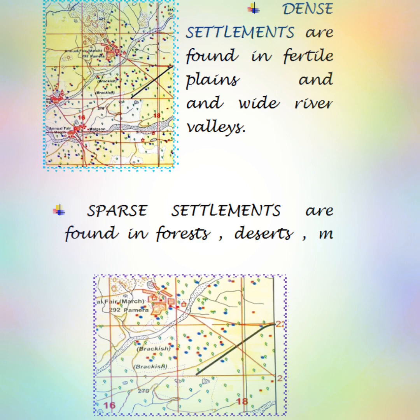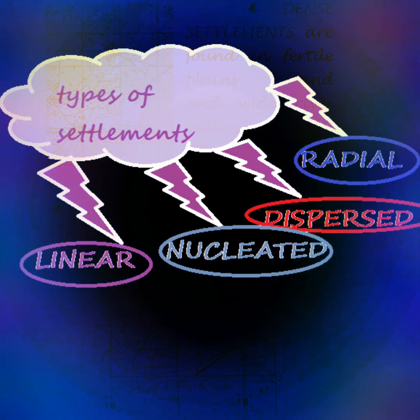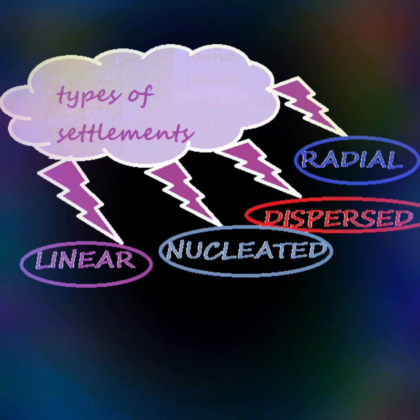On a map, all settlements are shown by a symbol in red color. Fertile plains and wide river valleys have dense settlements, while forests, deserts, mountain slopes, plateaus, and hilltops with poor vegetation have sparse settlements.